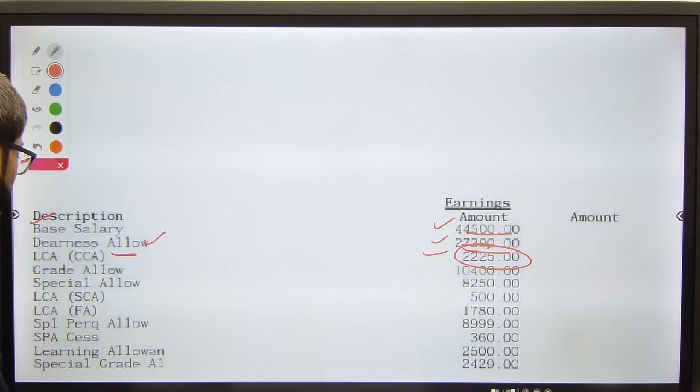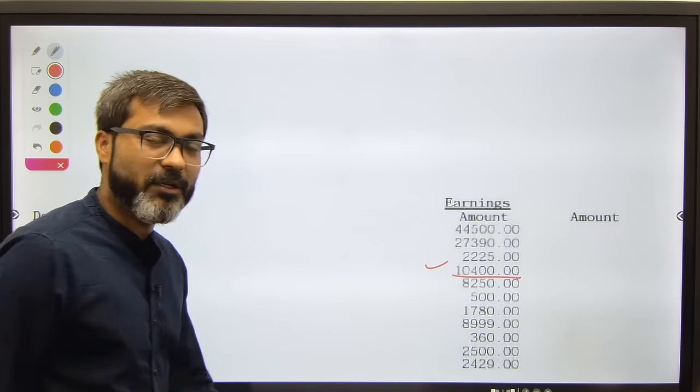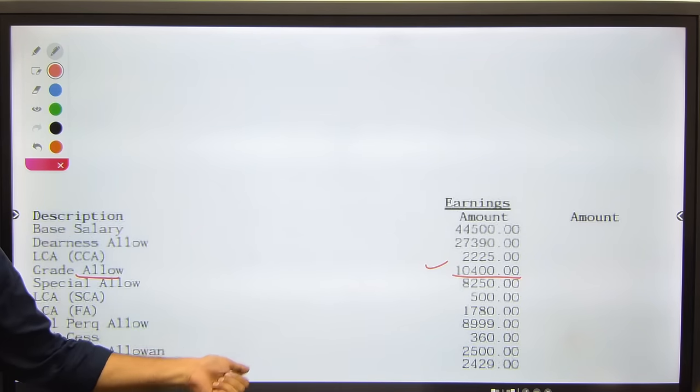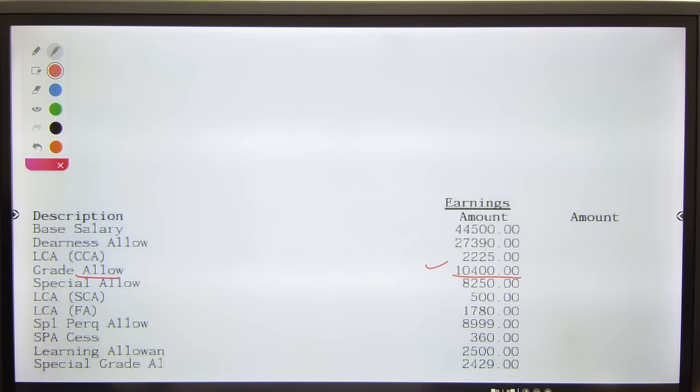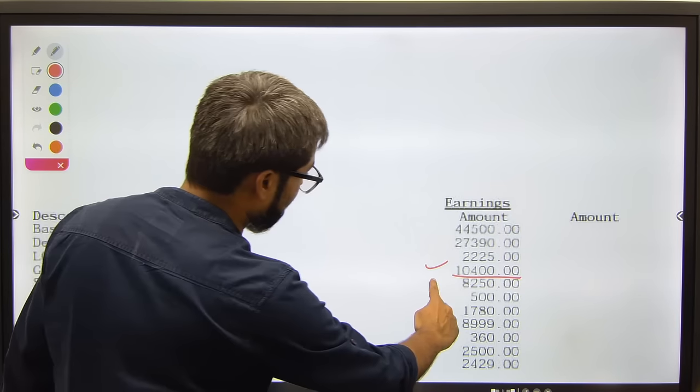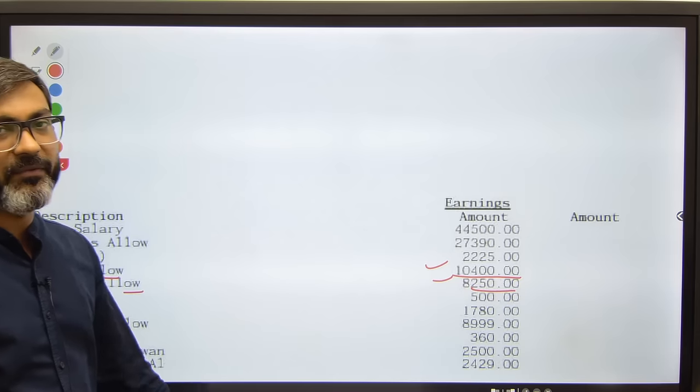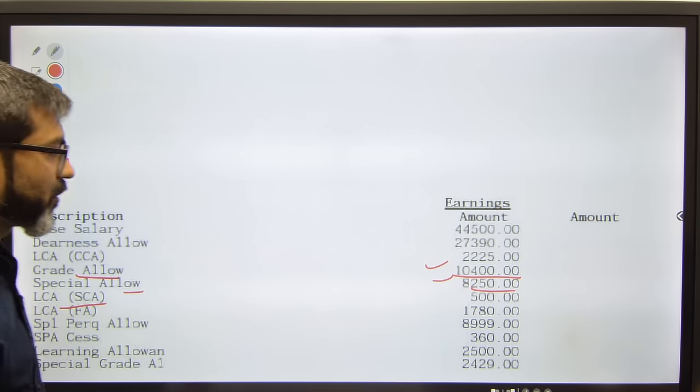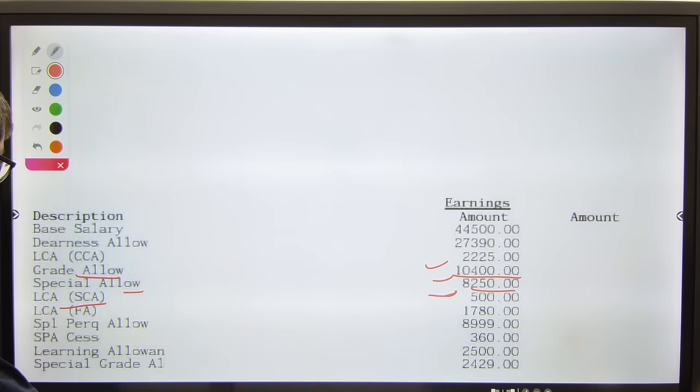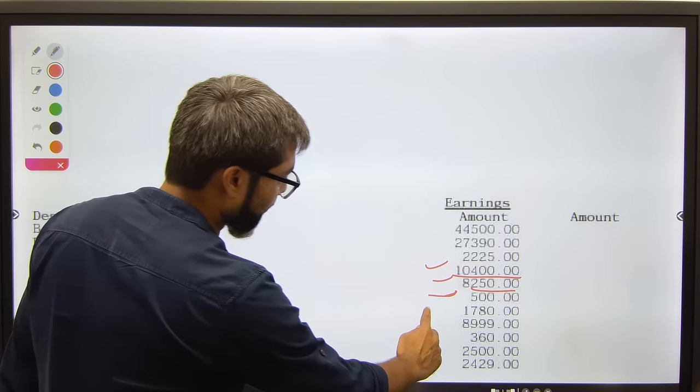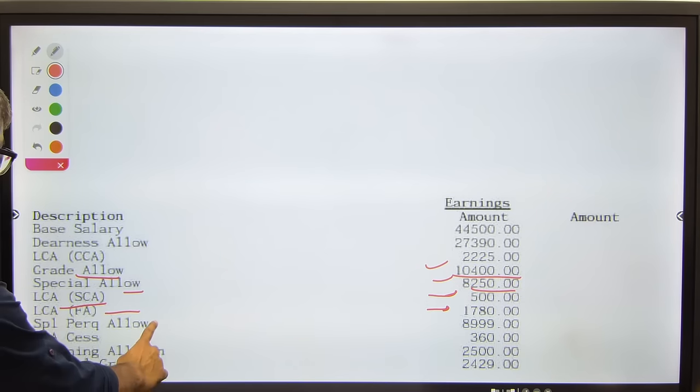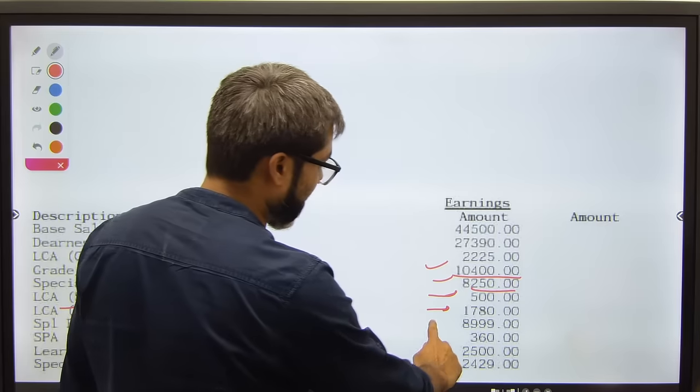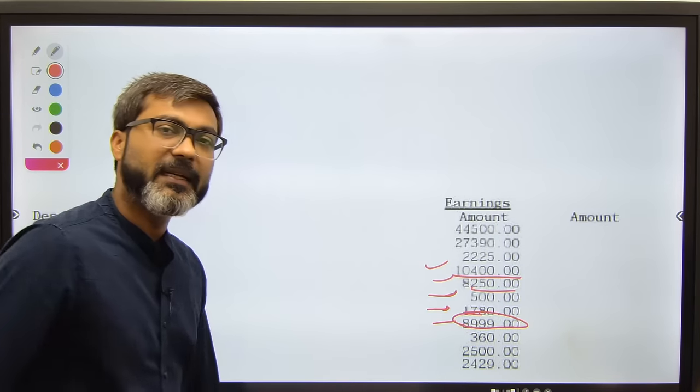Then you have grade allowance which is around ten thousand. In this officer's case it's ten thousand four hundred. Special allowance is also provided worth around eight thousand two hundred and fifty. LCA special compensatory allowance is worth five hundred. LCA FA is one thousand seven hundred and eighty.